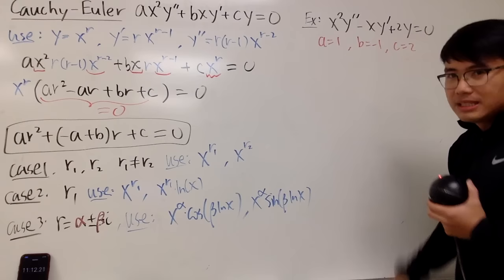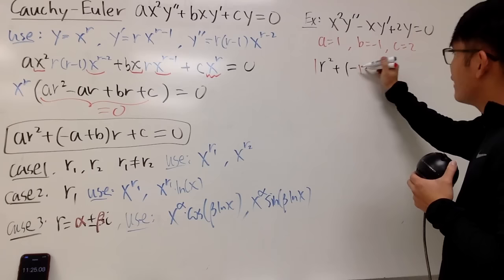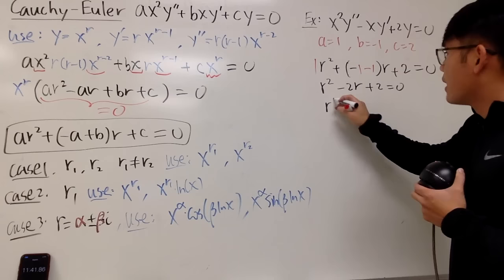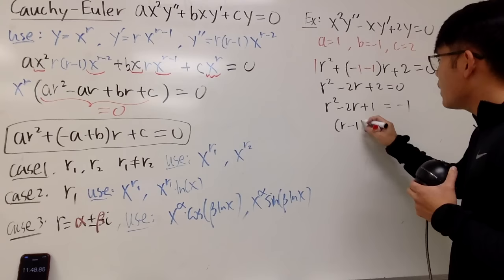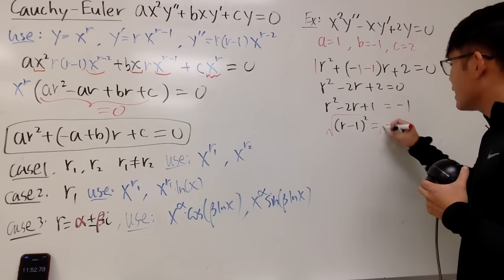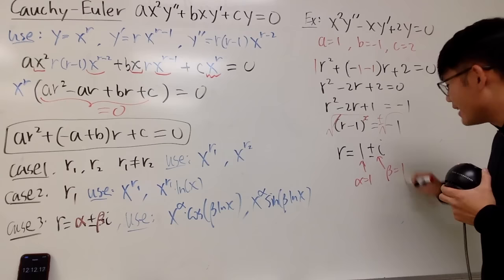Plugging in: r² + (−1 − 1)r + 2 = 0, which gives r² − 2r + 2 = 0. Completing the square: subtract 1 from both sides to get r² − 2r + 1 = −1, so (r − 1)² = −1. Taking the square root: r − 1 = ±i, therefore r = 1 ± i. So α = 1 and β = 1.